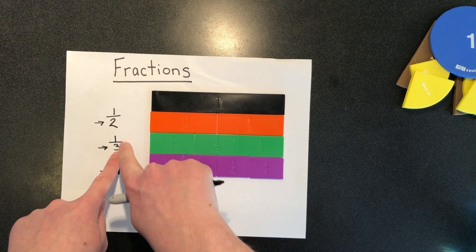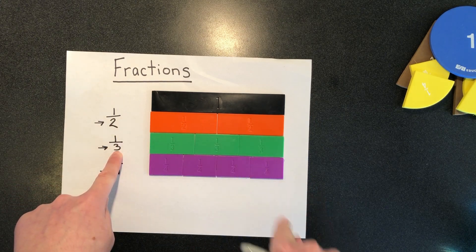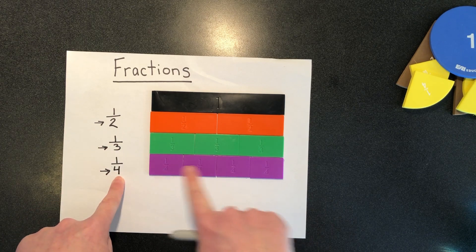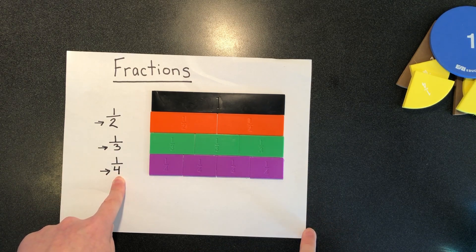So to build a whole with one half size pieces, there will be two pieces in the whole. To build a whole with thirds, there will be three pieces in the whole. And to build a whole with fourths, there will be four pieces in the whole.